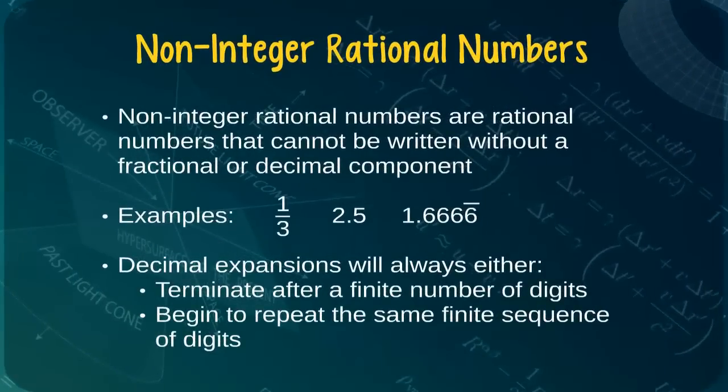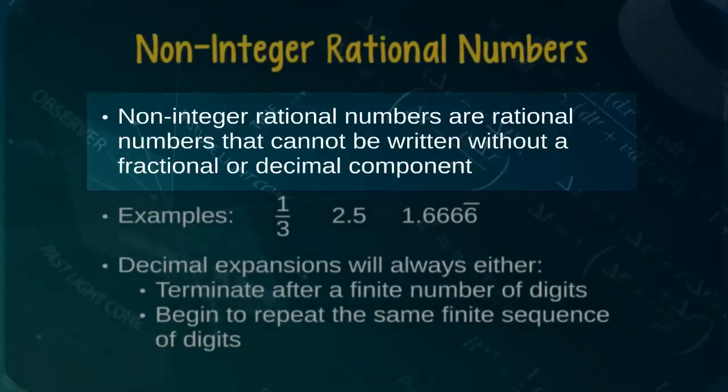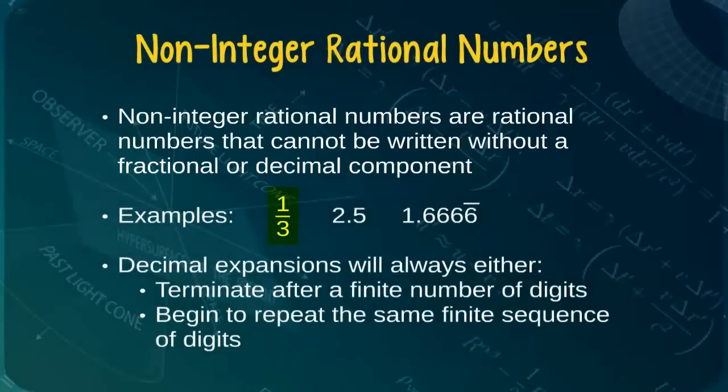Now that we have a basic knowledge of rational numbers, we can easily understand non-integer rational numbers. Non-integer rational numbers are simply rational numbers that cannot be written without a fractional or decimal component. For example, the numbers one-third, 2.5, and 1.6666 are all non-integer rational numbers, because they cannot be written without relying upon fractions or decimals.